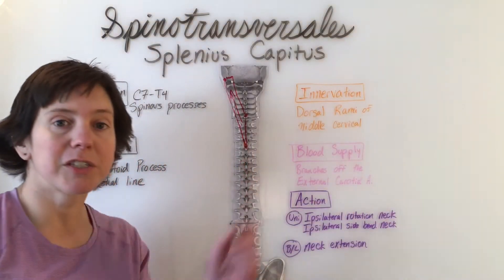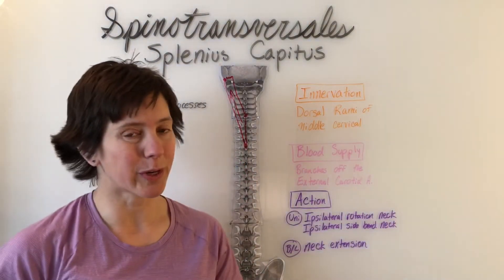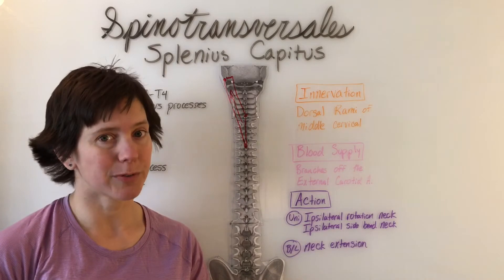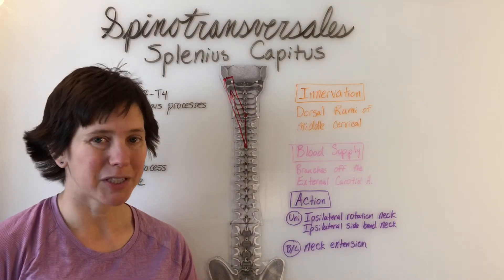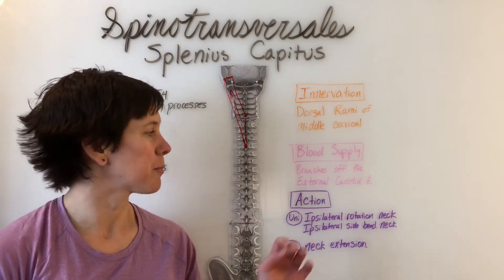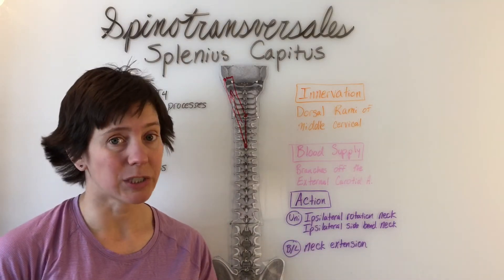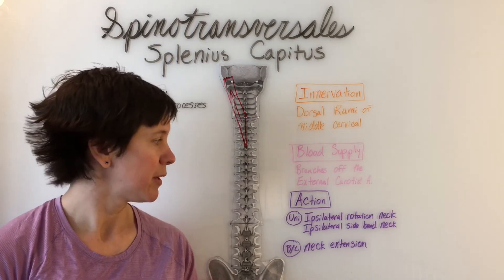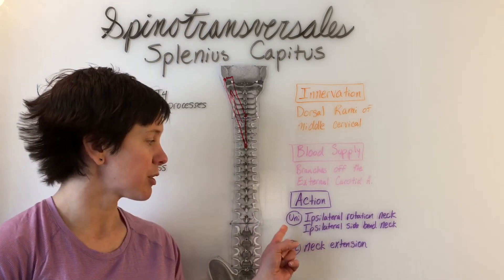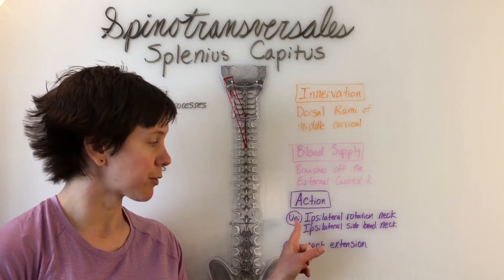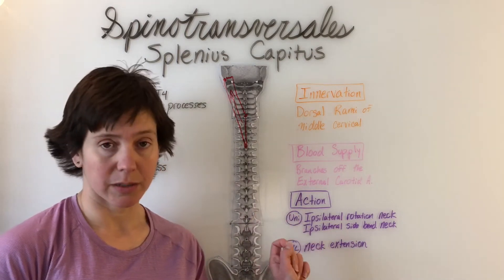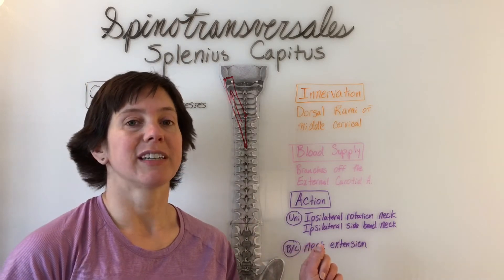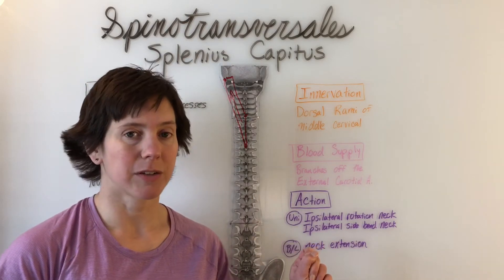Innervation is the dorsal rami of the middle cervical spinal nerves. Blood supply comes from branches off the external carotid artery, and the actions for unilateral contraction are ipsilateral side bend and rotation of the neck.